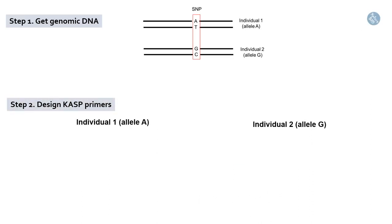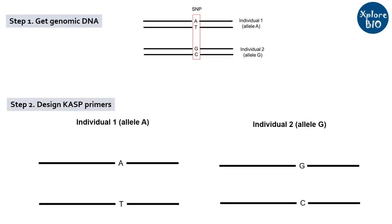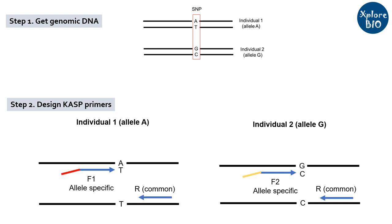Next you need to design three primers: two allele-specific forward primers for each allele and a common reverse primer. CASP utilizes allele-specific primers that only bind when they find complementary DNA. So at the end you would be able to distinguish which allele or SNP was present in your DNA of interest in a particular individual. I hope it's clear till here — just keep listening carefully and you will understand everything.